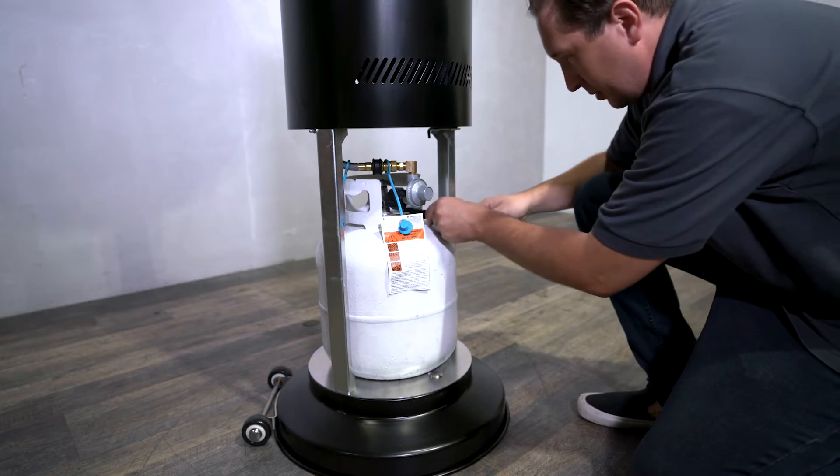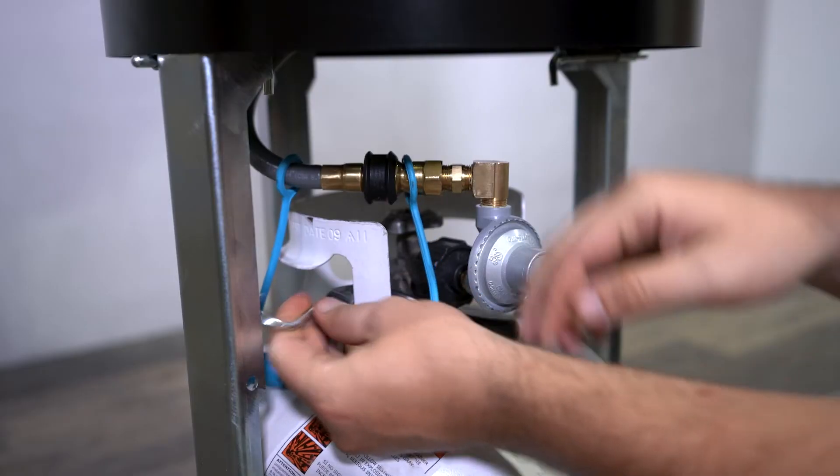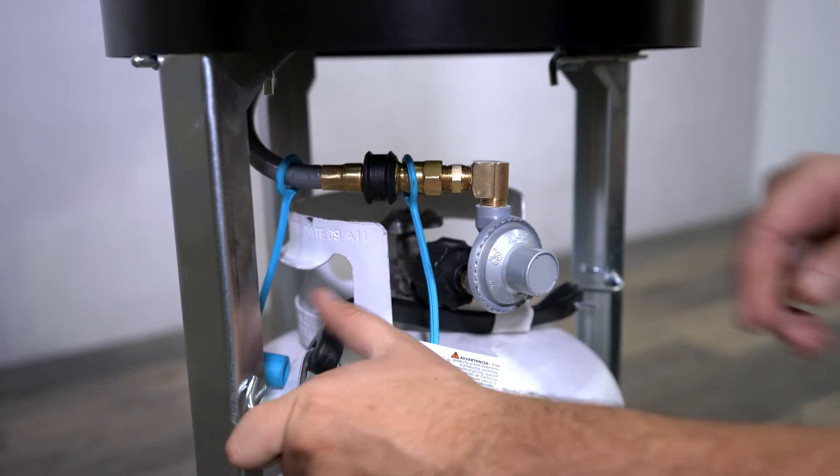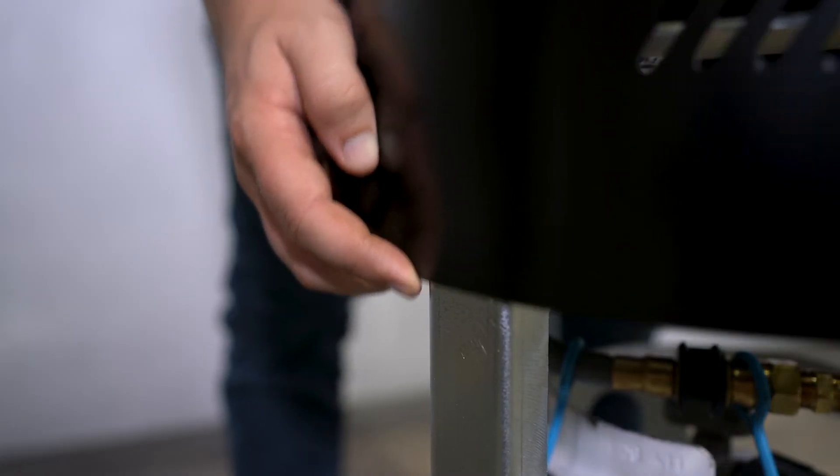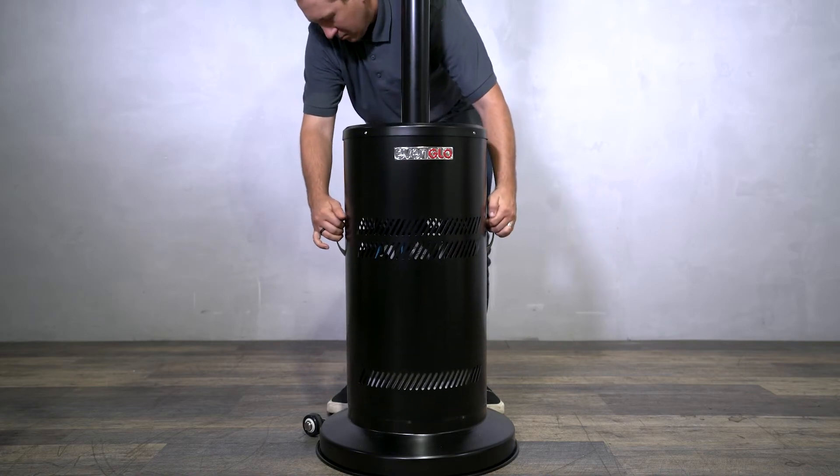We'll then attach the bungee cable from one side of the mounting holes to the other, guiding it through the handle and securing the propane tank in place. Once the propane tank is secured, we'll press in on the spring-loaded supports and lower the cover back onto the base.